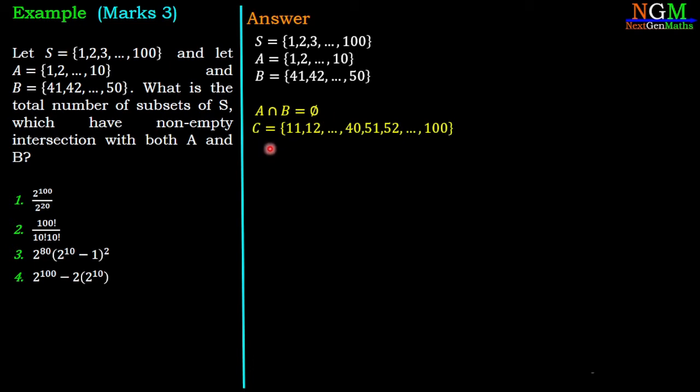Let C contain 11, 12 up to 40 and 51 to 100, which are not the elements of A and B. Now, A union C contains 1 to 40 and 51 to 100. And B union C contains 11 to 100 elements. A union C intersection B union C equals C.